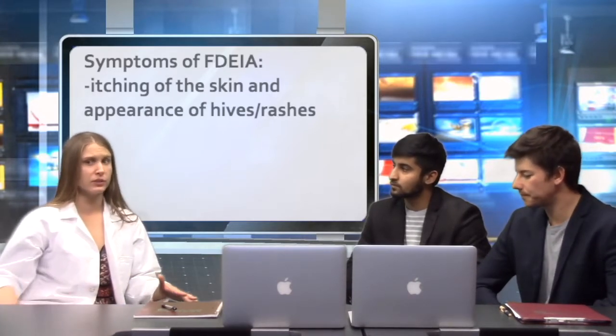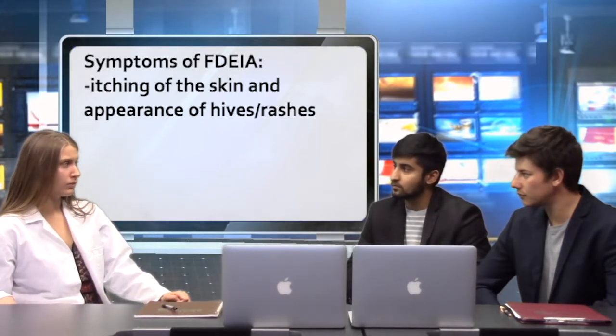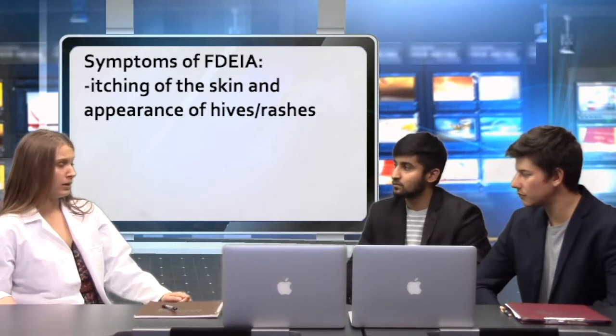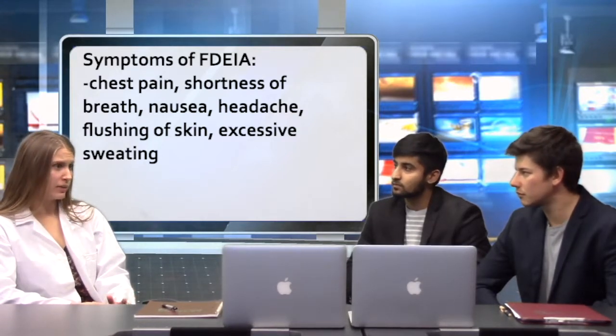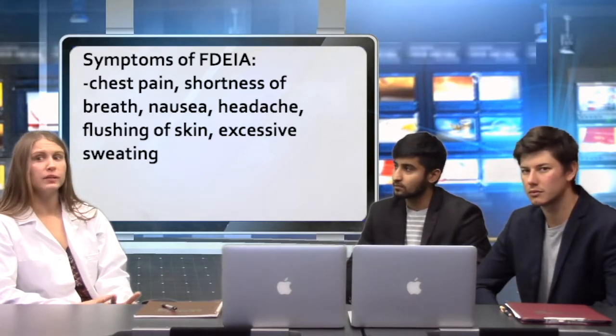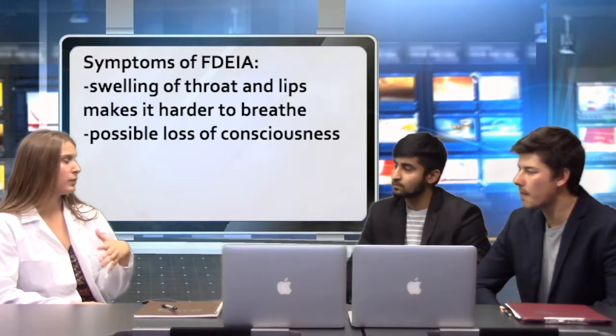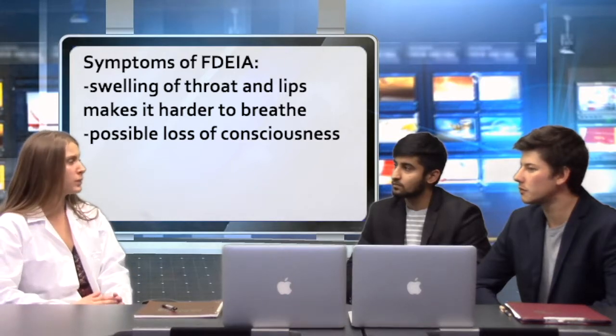So, Angela said that she had chest pain, shortness of breath, and some skin rashes that started to appear. Are these the only signs of FDEIA? Those are some of the most common ones, but definitely not the only ones. So, itching of the skin and the appearance of hives are two of the most common symptoms. The hives appear anywhere in the body and are quite large, very itchy, red, and quite bumpy. Chest tightness, shortness of breath, nausea, headache, flushing of the skin, and excessive sweating are also some other common symptoms. In addition, your throat and your lips will often swell up, which will make it harder to breathe, and some people will have a sensation that they're choking, and in really severe situations, some people will even lose consciousness.